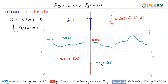We have done this part before. So this integral is basically the area under this curve. For the scaled impulse, the area under this curve is simply x(0).